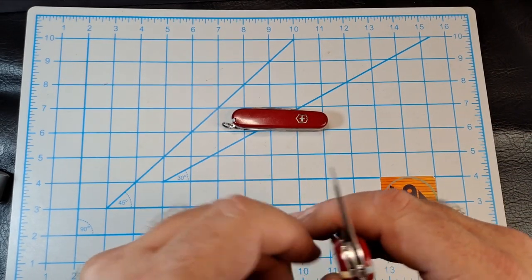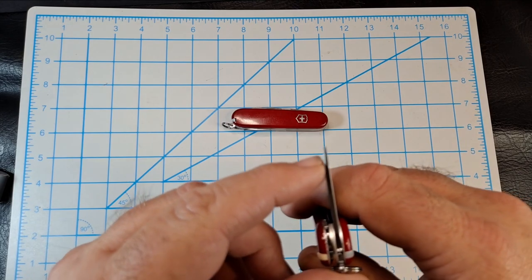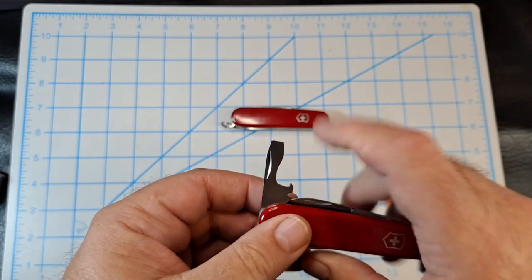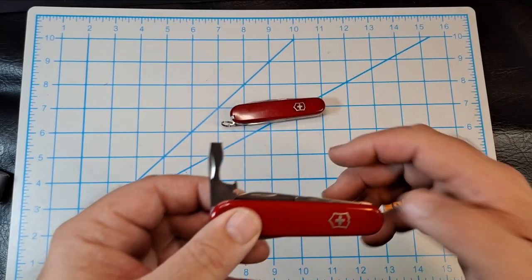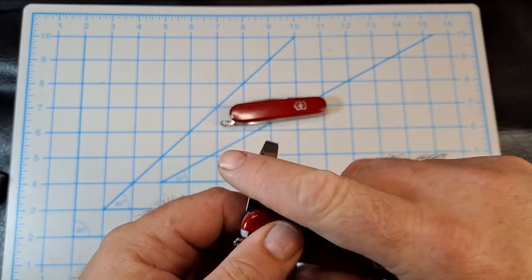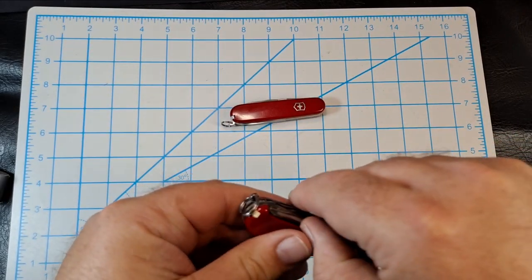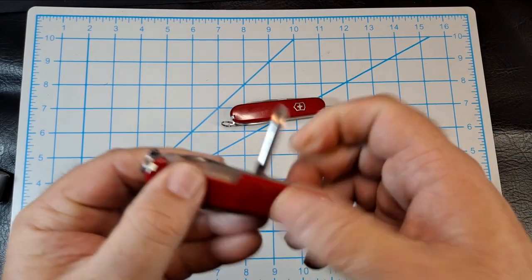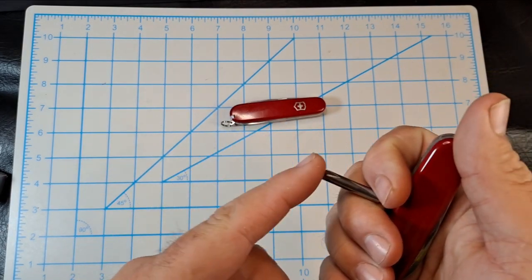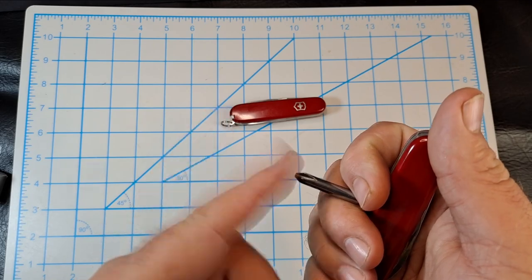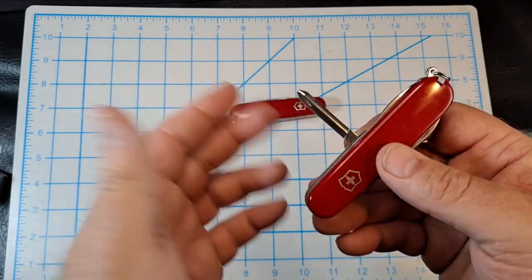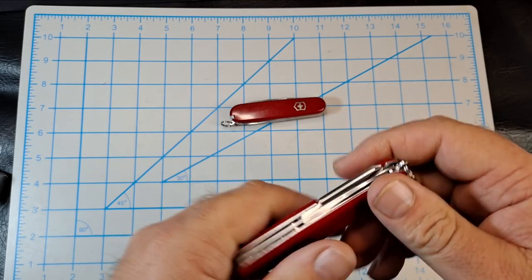On this side you have your bottle opener, cap lifter, with a larger flathead screwdriver, which actually works pretty good as a little pry tool. You can see it's kind of angled right here. I've used the one on the Hiker as a little pry tool. Plus you have the wire stripper. On the back, same as the Hiker, you got your short Phillips head screwdriver. It works good - it's round, it's full, not one of the 2D type of Phillips.